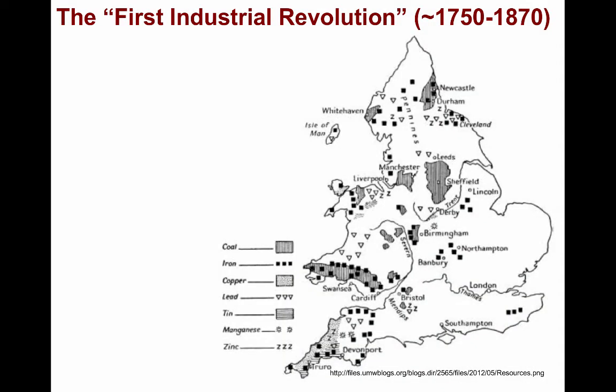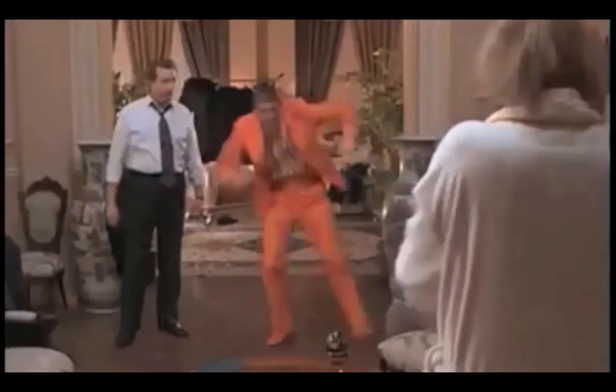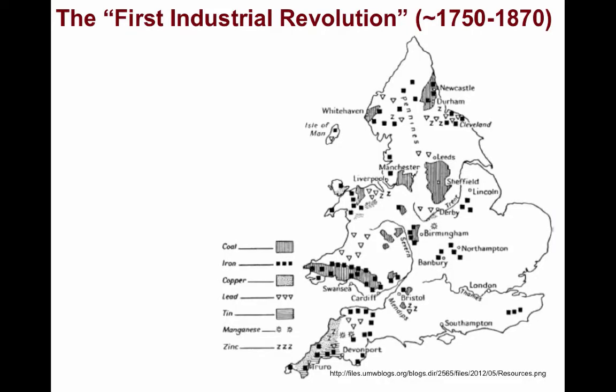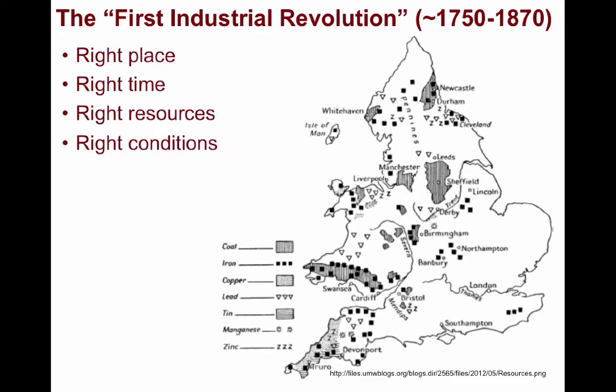Now we will segue into the First Industrial Revolution. What made this time period so revolutionary was the replacement of human labor with machines, often powered initially through the use of animals. This revolution had its hearth in Britain, and why it began there has everything to do with geography.